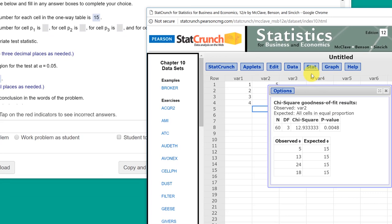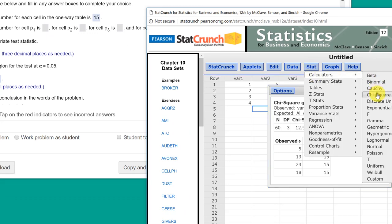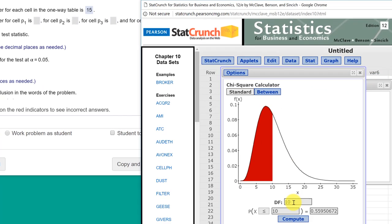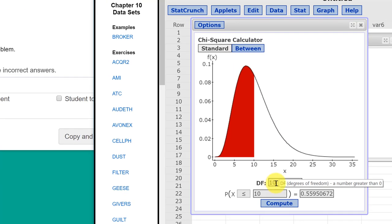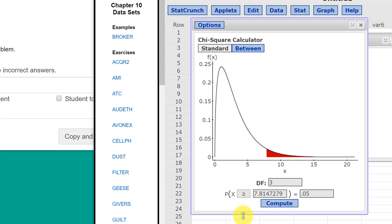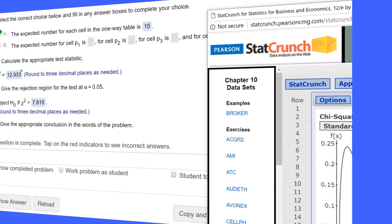So how do we get that? Well, we again can do that using StatCrunch. This time we go to Stat, Calculators, Chi-Square. And for the goodness of fit, that's the simple one, the degrees of freedom is equal to the levels, or the categories minus one, which would be three. And our alpha is 0.05. We always want the right tail, so make sure you select that. And that gives us a critical value of 7.815. And that's the answer they want there.